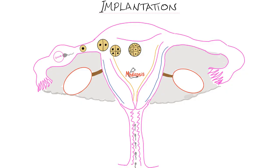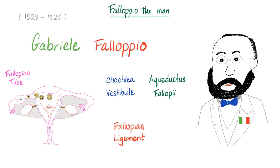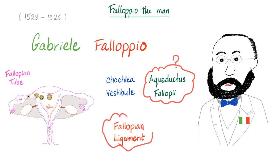Where does fertilization happen? In the fallopian tube — specifically in the ampulla of the fallopian tube, the widest area. Why do we call it the fallopian tube? It is thanks to Italian scientist Gabriel Fallopio, who discovered the fallopian tube and also contributed to the discovery of the cochlea and vestibule of the inner ear, the aqueductus fallopii, and the fallopian ligament. Please let me know in the comments what the aqueductus fallopii or the fallopian ligament is.